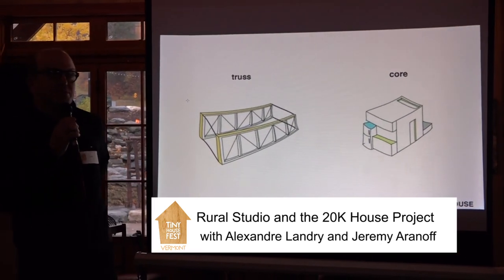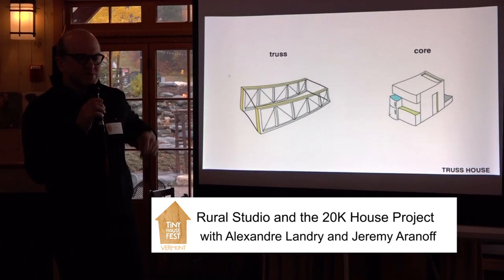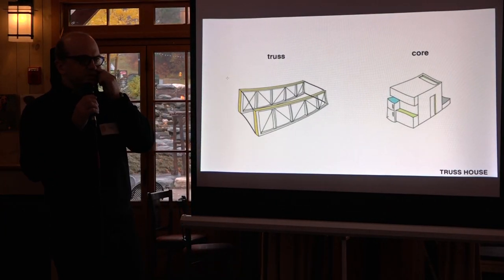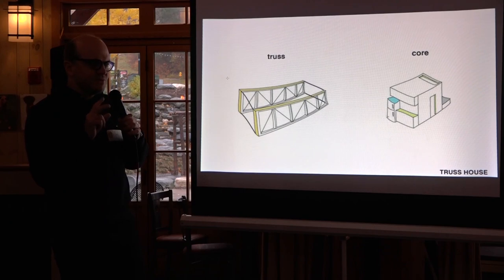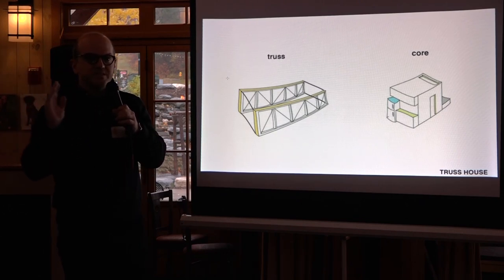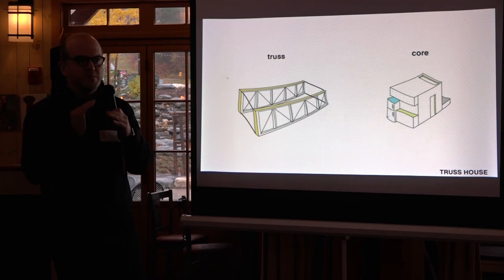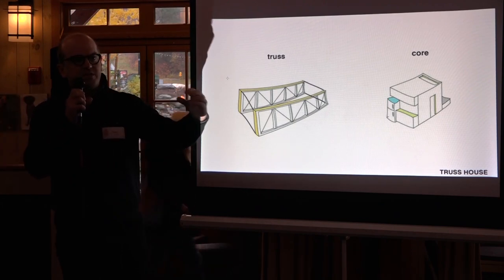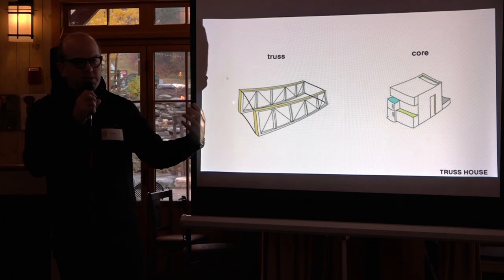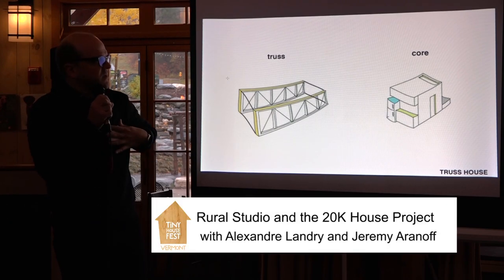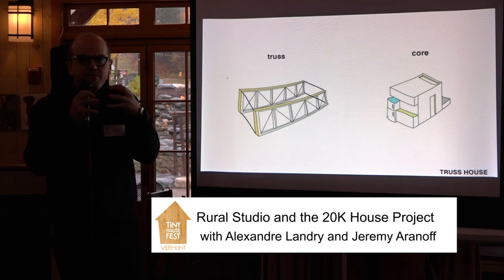On to the Trust House — the third iteration of the 20K house. We took learnings from Alex's project and the previous one and arrived at two main concepts: the truss and the core. For the truss: we're already paying for two-by-fours or two-by-sixes framing walls, so if we manipulate them in a different geometry, we can save on footing costs — the truss spans so you only need footings at two or three locations along the wall.